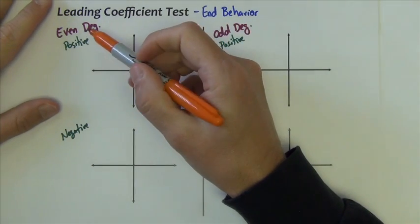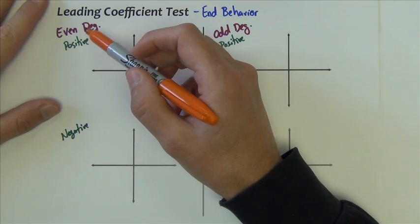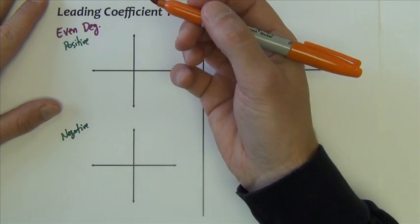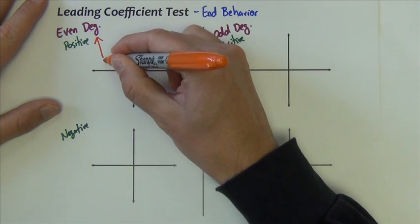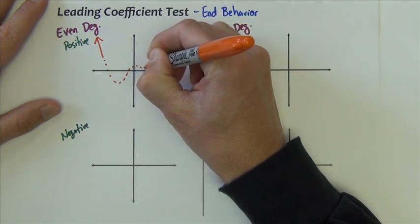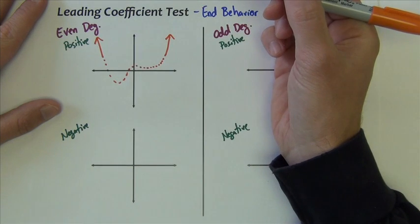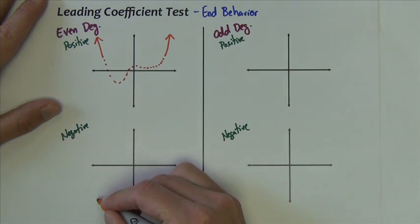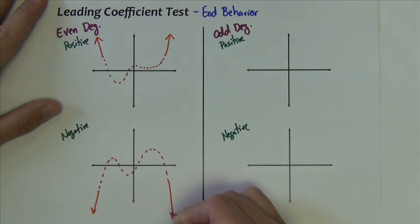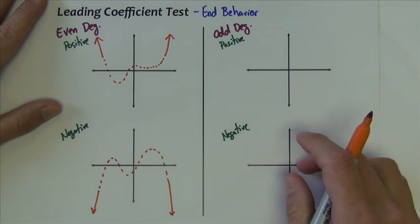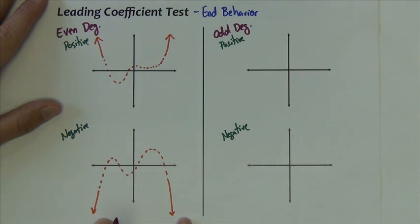If the highest power is even and the leading coefficient is positive, the function will go up on the left and up on the right. In the middle it can do a whole host of things depending on what that power actually is. If it's even and negative, it's going to come down on the left and down on the right. So with even-degreed polynomials, either both ends go up or both ends go down, depending on whether the leading coefficient is positive or negative.